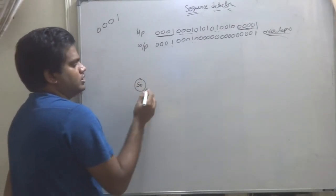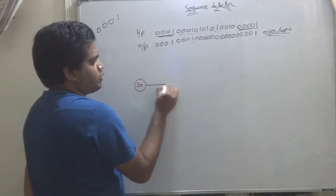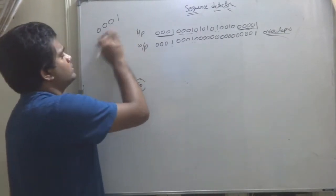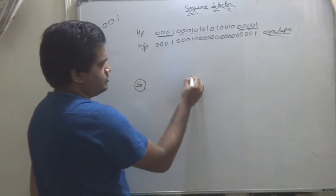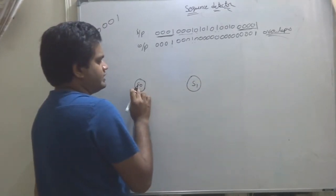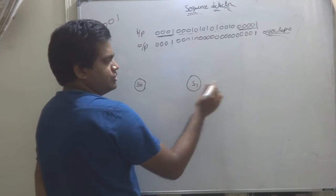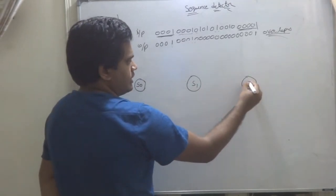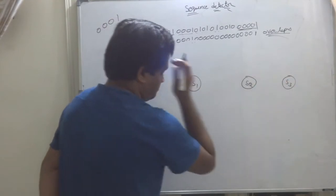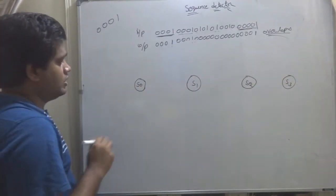S0, you are in S0. This you will write properly. How many stages here? For 3 bits, you have 4 stages now. S0 means 00 state. S1 means 01 state. S2 means 10 state. S3 means 11 state.